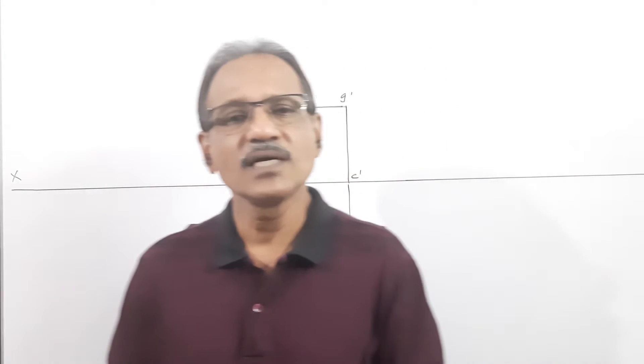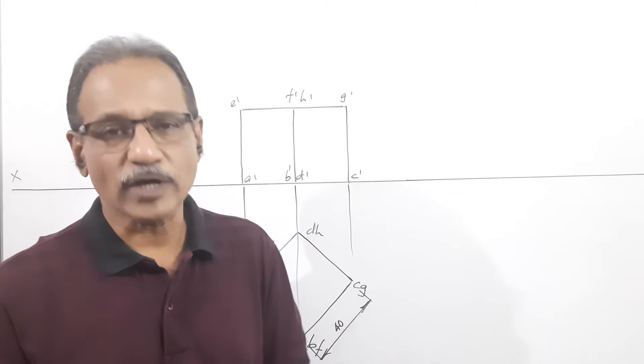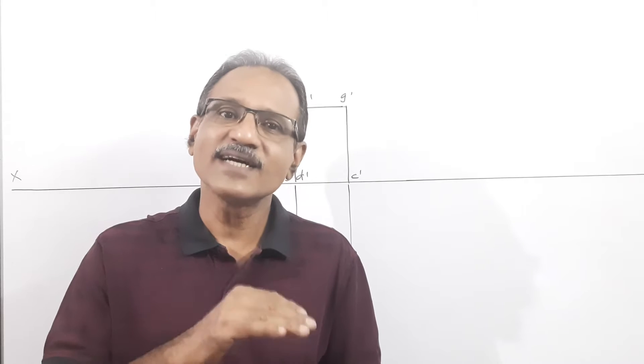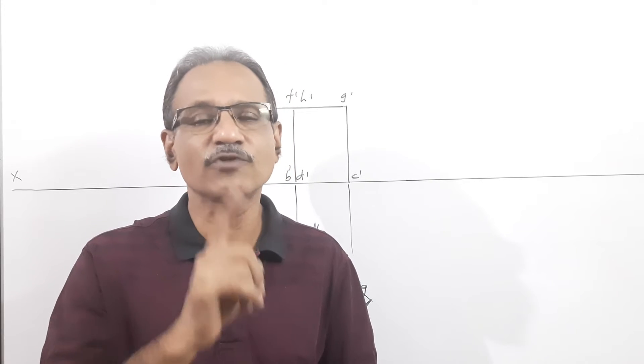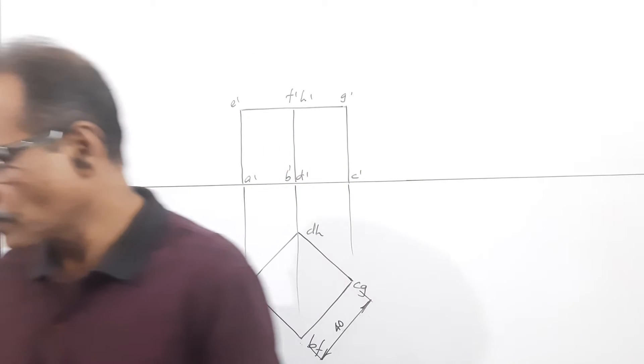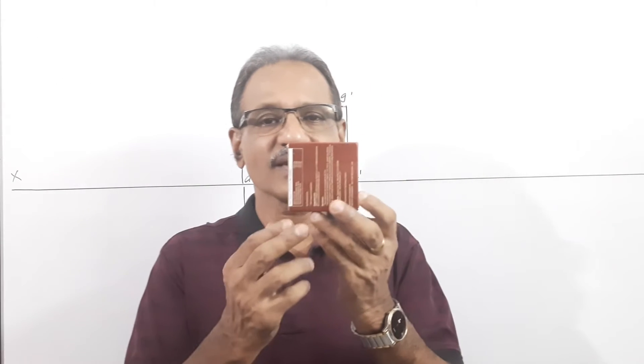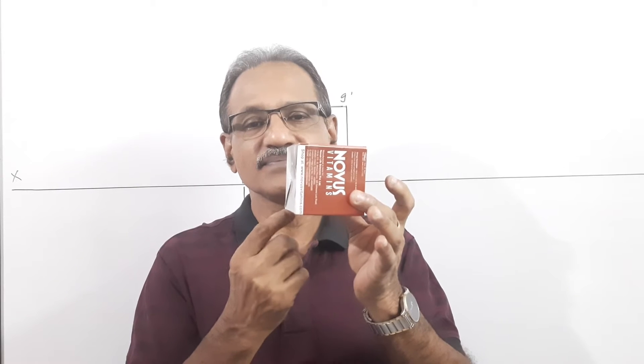What is a cube? A cube is a square prism whose height is equal to the side of the cube. So there is only one dimension for a cube. A cube 40mm means the sides are 40mm and the height also is 40mm. The base is 40mm side, the top is 40mm side, and the height is also 40mm.